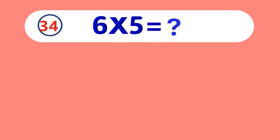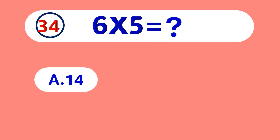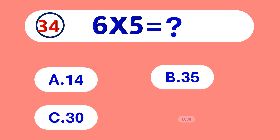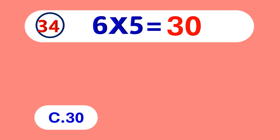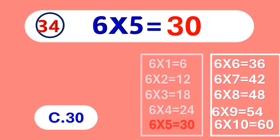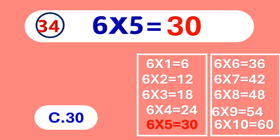6 times 5 is equal to... 30. 6 times 5 is 30.